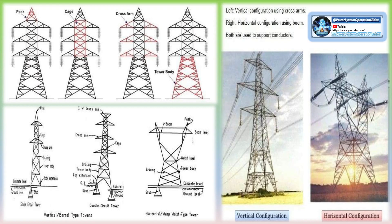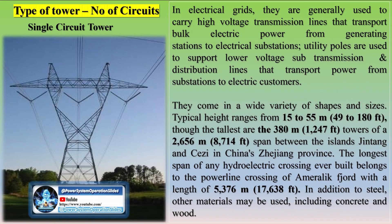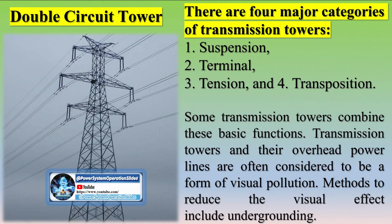Unlike suspension towers, tension towers use strain insulators to resist axial loading placed on the tower from the conductor's net tension. Dead-end or anchor towers support the weight of the connecting conductors and cater for the tension in the conductors, also using strain insulators. Dead-end towers are typically used at the end of a transmission line before the line passes to a substation or underground line. They are often installed periodically between a series of suspension towers to reduce the likelihood of cascade failure when a conductor on the transmission line fails.